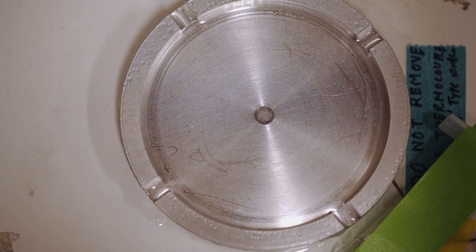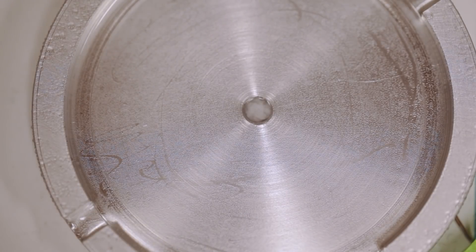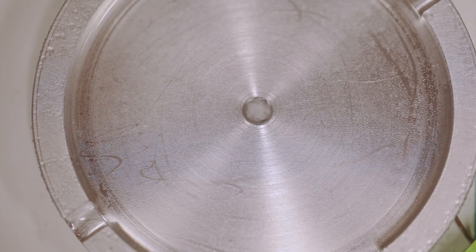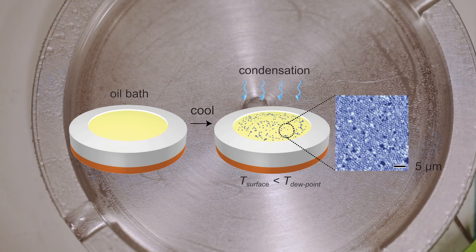This new process takes a bottom-up approach by using condensation to create the droplets. First, they take a reservoir of oil with an added surfactant, place it inside a chamber with very humid air, and cool the oil.